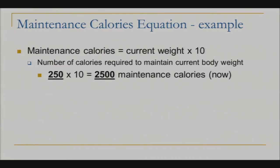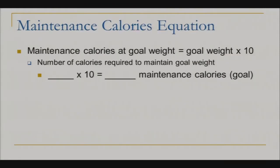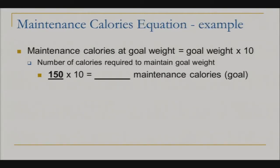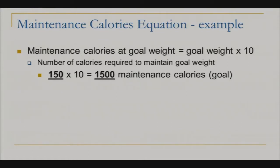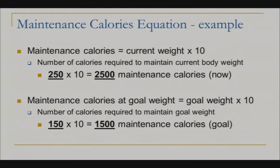Now in order to lose weight, we have to deficit calories — take in less. Let's now calculate your maintenance calories at your goal weight. The second line allows you to calculate your maintenance calories at your goal weight. Plug in your goal weight, multiply that by 10, and that will provide your maintenance calories at your goal weight. So if your goal weight is 150 pounds, multiply by 10 — that would be 1500 calories to maintain your goal weight. Notice the difference between the maintenance calories at your current weight versus your goal weight.